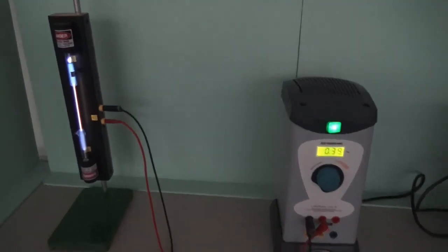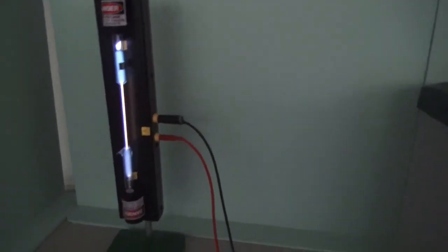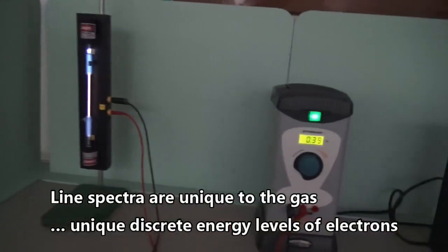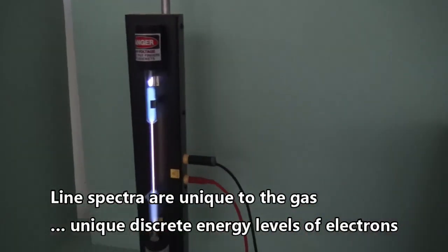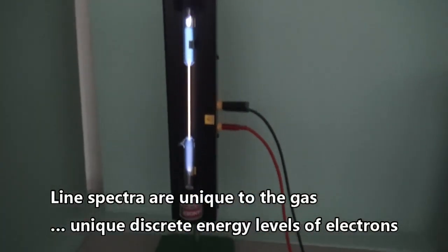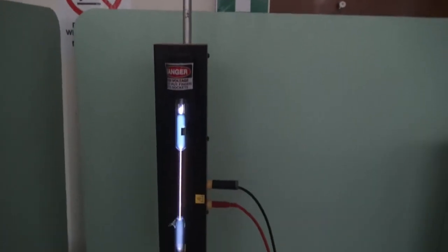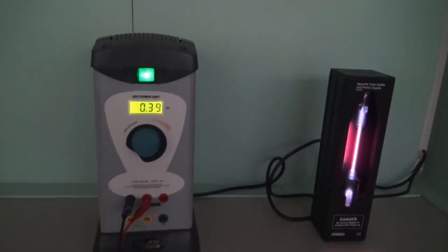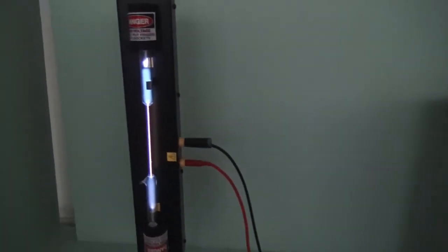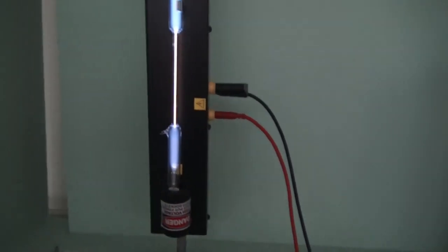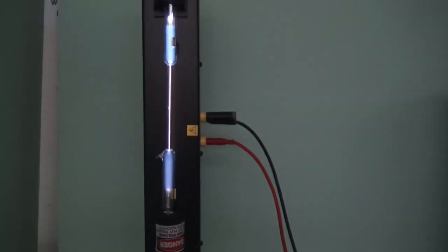Let's have a look at light spectra. Here we have a tube containing krypton. And when we connect it to an EHT, we have this very characteristic light.